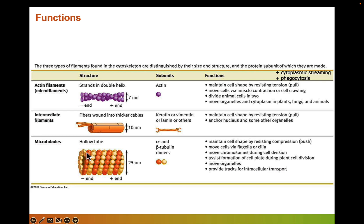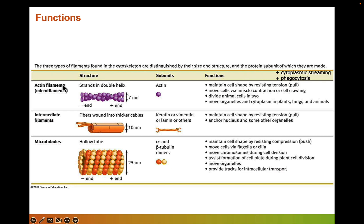Microtubules are made of alpha and beta tubulin dimers assembled into protofilaments forming a twenty-five nanometer tube, with a minus end and a plus end. They have two motor proteins: kinesin, which moves toward the plus end, and dynein, which moves toward the minus end. Microtubules help maintain cell shape, move flagella and cilia — important for cells in our respiratory tract that beat to keep bacteria away — move chromosomes during cell division, assist with plant cell plate formation, and provide tracks for intracellular transport. These proteins are really cool, and I hope you enjoyed the videos!